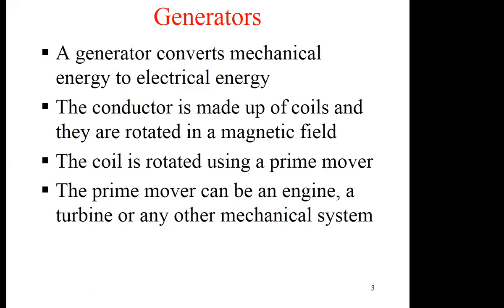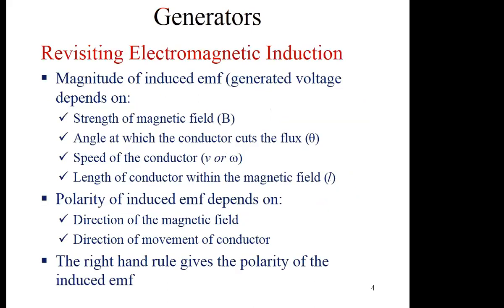If you look at the generator in simple terms, a generator converts mechanical energy to electrical energy, and the conductor is made up of coils which are rotated in a magnetic field. The coils are rotated using a prime mover — that's why you need an engine to turn a generator. That turning will cause the conductors to move around the magnetic field, and if your conductor moves around the magnetic field, an EMF is generated. That EMF will come out as the voltage generated by your generator.